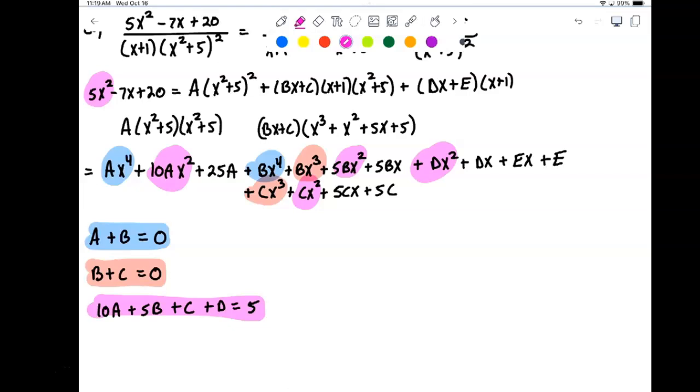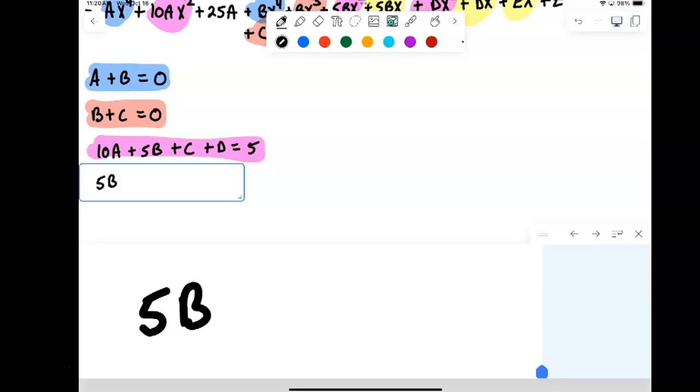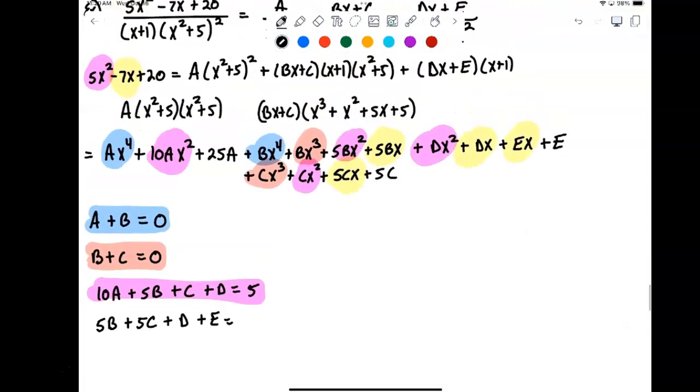Okay, we keep going. Up next we have our x terms. So minus 7x. Look through here. I don't have any with the a's. I have a 5bx, I have a dx, I have an ex, and I have a 5cx. So putting all those together: 5b plus 5c plus d plus e. Those have to be equal. In this case, that's got to be equal to minus 7. Going back to the original equation here. So that's my yellow equation.